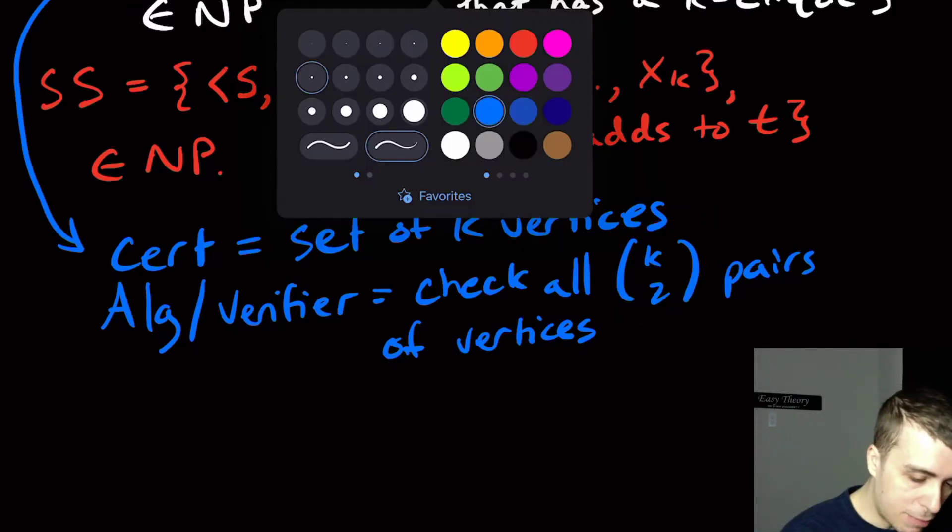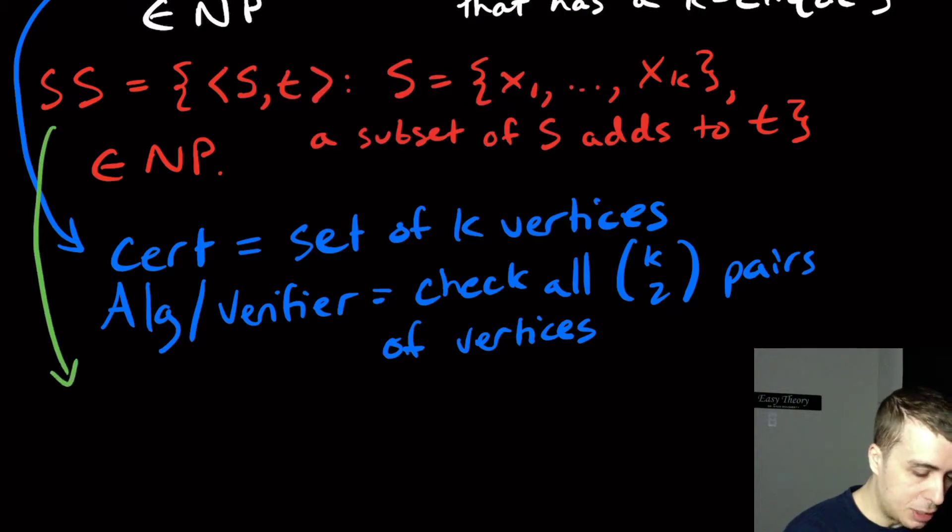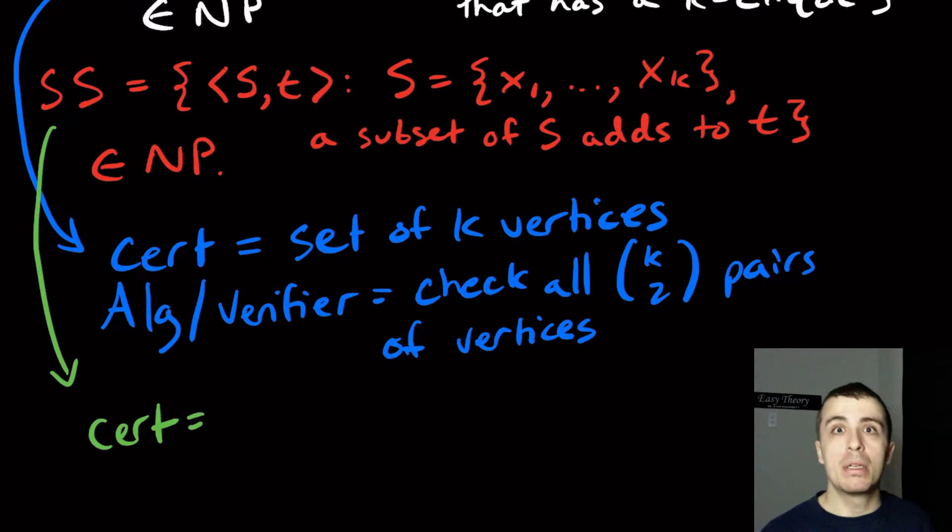Okay, well what about for subset sum? What would the certificate be here? Well, very similarly, what could I give to you to determine whether or not there is a subset of these set of integers such that they all sum to t?